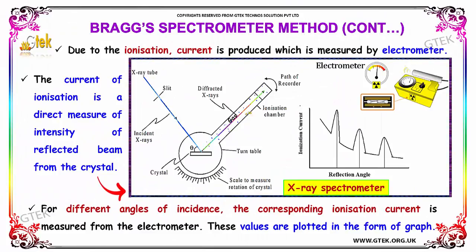Due to the ionization, current is produced which is measured by the electrometer. The ionization current is a direct measure of intensity of the reflected beam from the crystal.